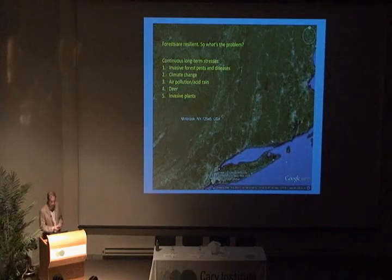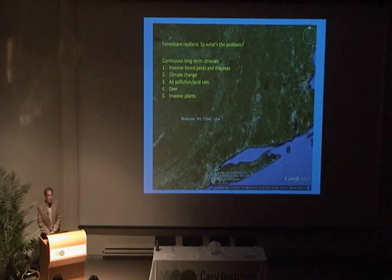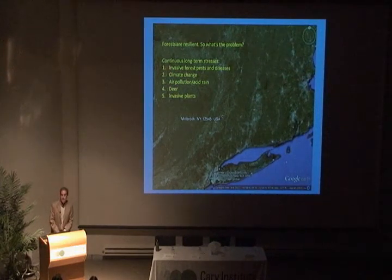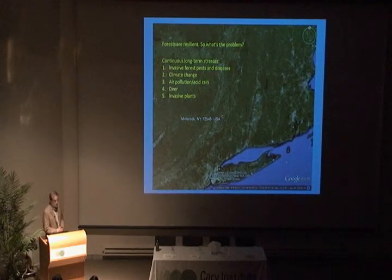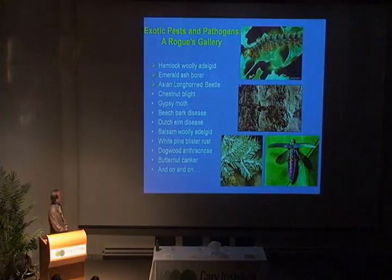I've got five things listed here. The last four — climate change, air pollution, deer, and invasive plants — using a human health analogy, those are like chronic diseases that zap your strength. But the first one is like getting hit by a truck. We have invasive forest pests and diseases that are coming in and just wiping out whole species. That's what I'm going to focus on.